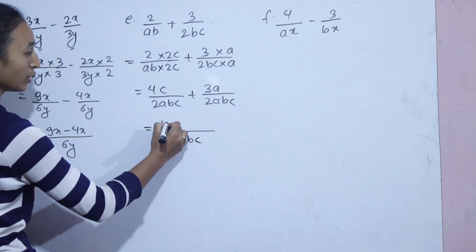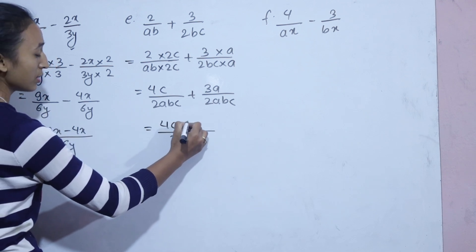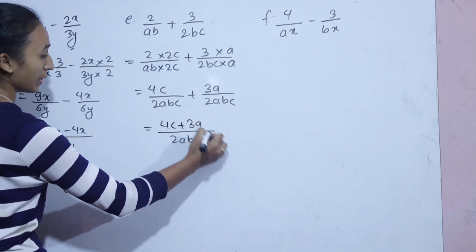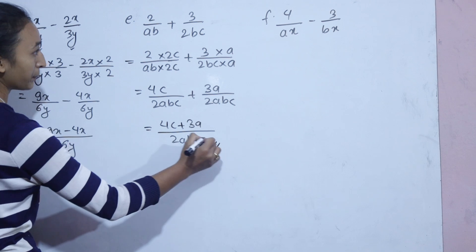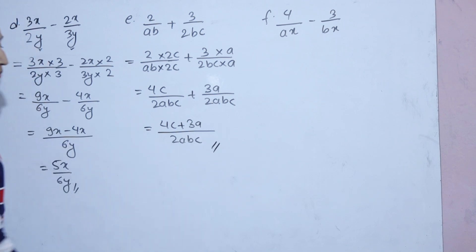With the same denominator 2abc, we combine to get 4C plus 3A by 2abc. That is how you can do it.